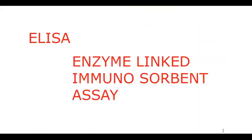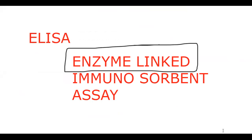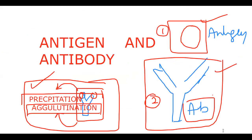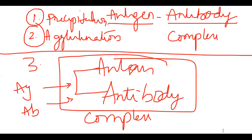ELISA is a test used to identify those cases where antigen-antibody complexes are not visible either as precipitation or agglutination. We are going to link the enzyme — that is the first point to remember. ELISA is one of the methods used when you cannot see antigen-antibody complexes as precipitation or agglutination. By adding enzyme to the antigen or antibody, we do specific tests.